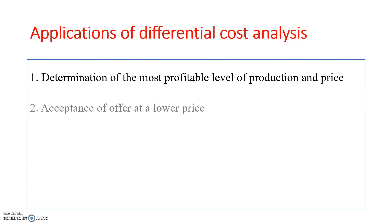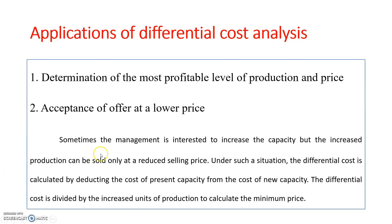The second application is acceptance of an offer at a lower price — whether to accept or reject a new offer. Sometimes management is interested to increase capacity, but the increased production can be sold only at a reduced selling price. Under such a situation, differential cost is calculated by deducting the cost of present capacity from the cost of new capacity. Differential cost is then divided by the increased units of production to calculate the minimum price for the additionally produced units.